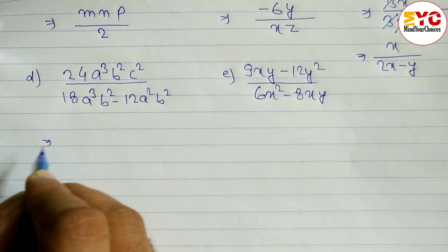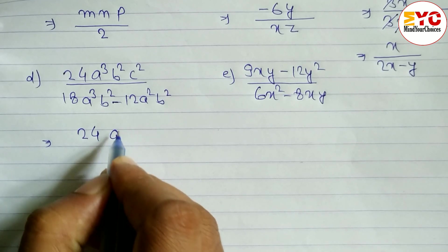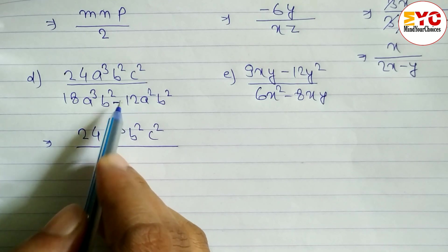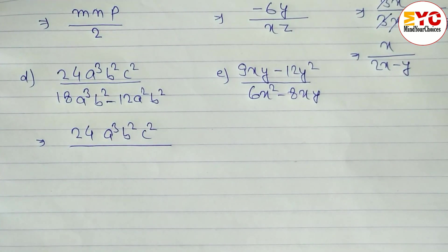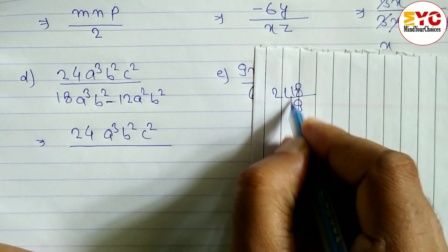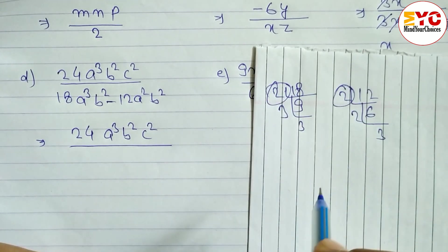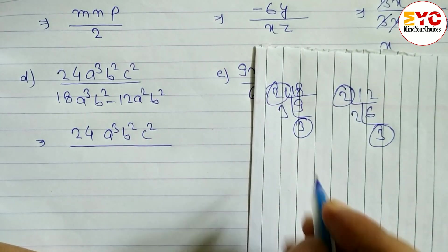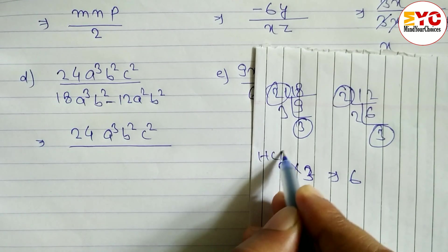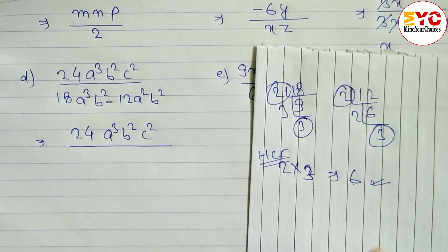The next question has a negative sign with two terms in the numerator but one term in the denominator: 24a³b²c² divided by (18a²b² - 12a²b²). To take the common of 18 and 12: factoring 18 gives 2×3×3, and factoring 12 gives 2×2×3. The common factors are 2 and 3, so the GCF (HCF) is 6.